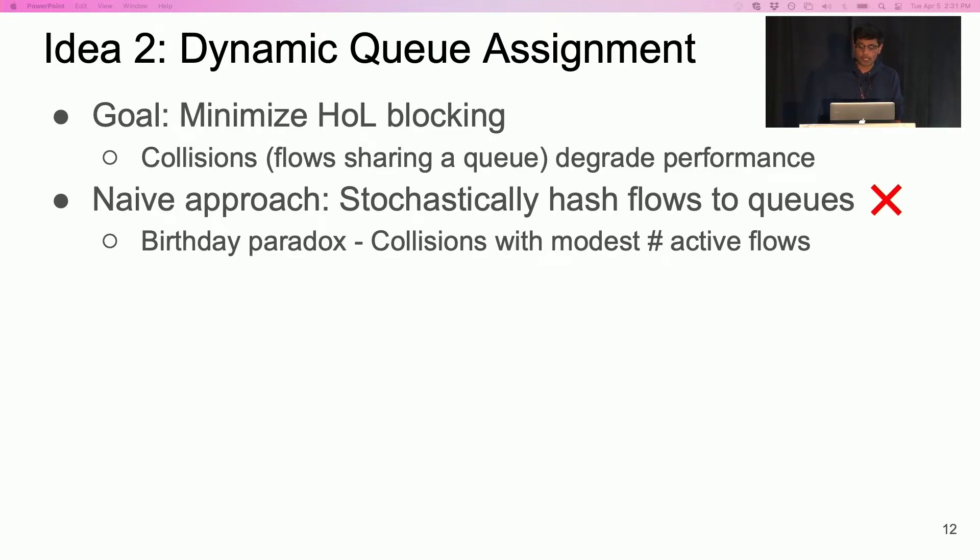It turns out, even with a modest number of flows at a port, the birthday paradox implies that there is a significant chance that two flows share a queue. As an example, when five active flows are assigned to 32 physical queues, the probability that two flows will randomly be assigned to the same queue is 28%.